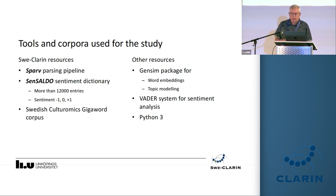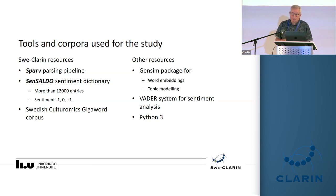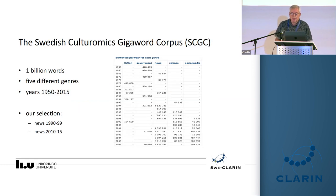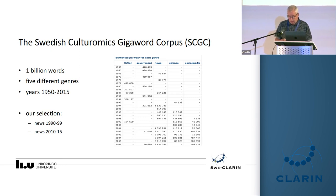From SweCLARIN, we needed — as we often do — the parsing pipeline called Sparv, which has the advantage of giving us lemmas and word senses. For sentiment analysis, we have a dictionary called Sensaldo, which gives sentiment attributes to word senses. Then there is the general language corpus called the Cultural Mix Gigaword corpus, which is quite large — one billion words from different text types and time periods. In this work, we selected materials especially from the 1990s and for the most recent period, 2010 and forward.